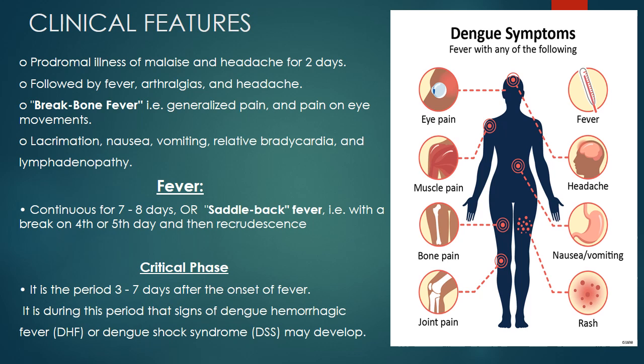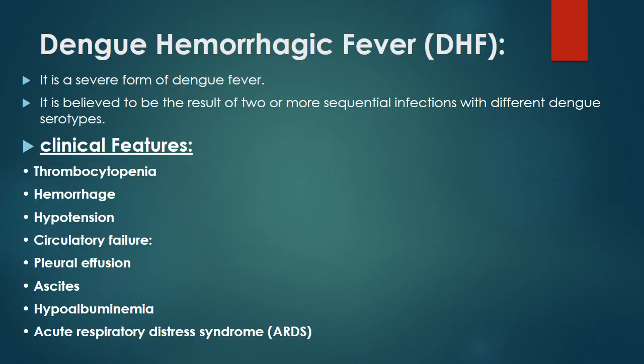The critical phase is the period three to seven days after onset of fever. During this period, signs of dengue hemorrhagic fever or dengue shock syndrome can occur. Dengue hemorrhagic fever is a severe complication of dengue, believed to result from two or more sequential infections with different dengue serotypes.